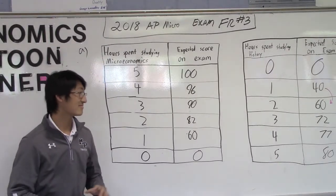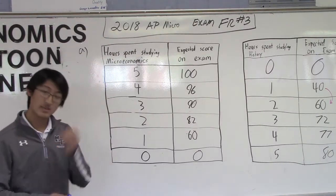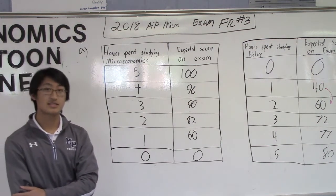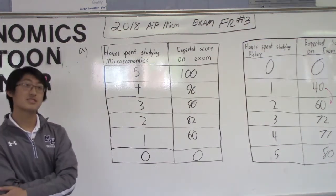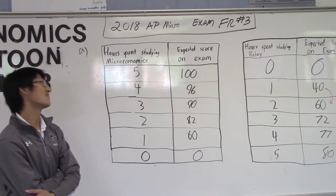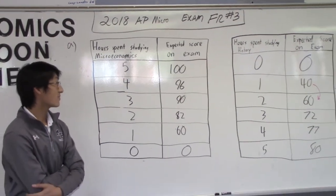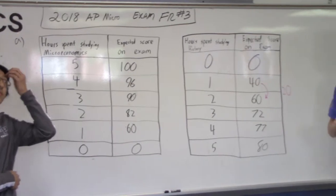Assume Noralia increases the time she allocates, I love that word, allocates, to studying history. Great work. What happens to the opportunity cost of studying history? And this one you've got to explain.